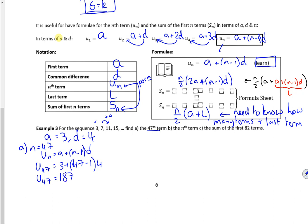And then b, what's the nth term? So this is going to be an algebraic expression for it, because n is n. So un, write down the formula. Un is going to be 3 plus n minus 1 times 4.